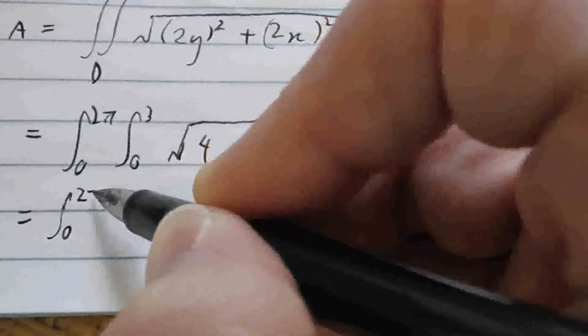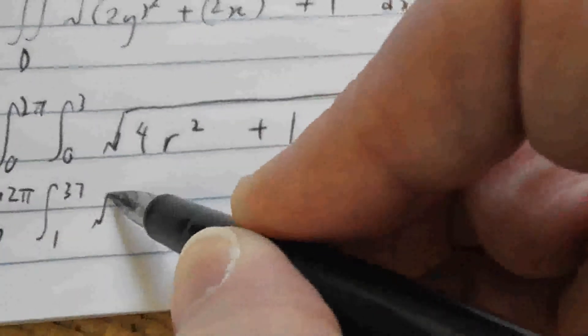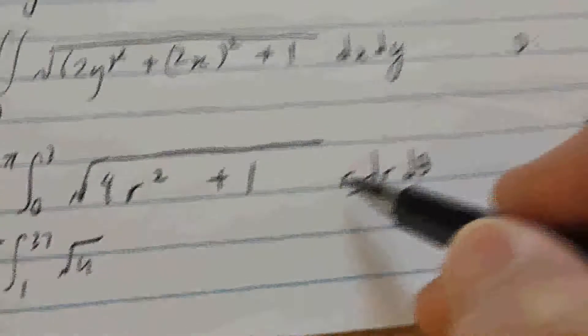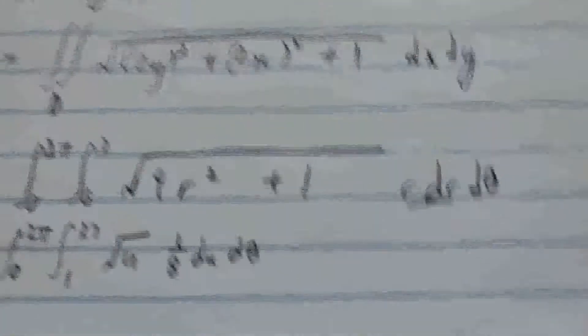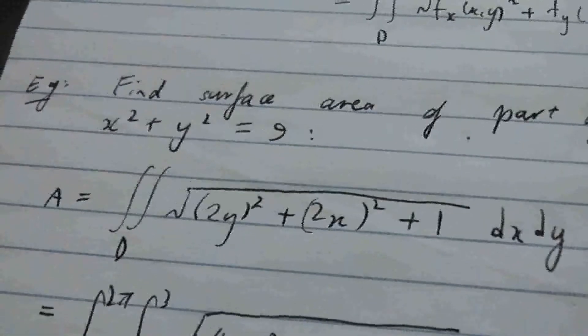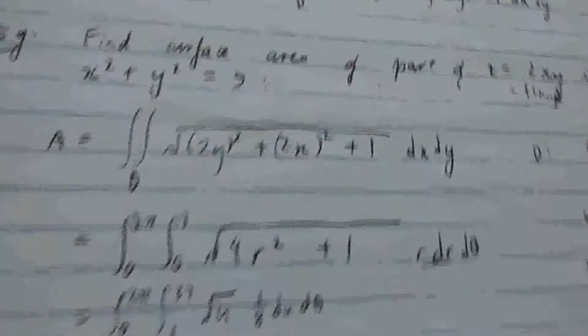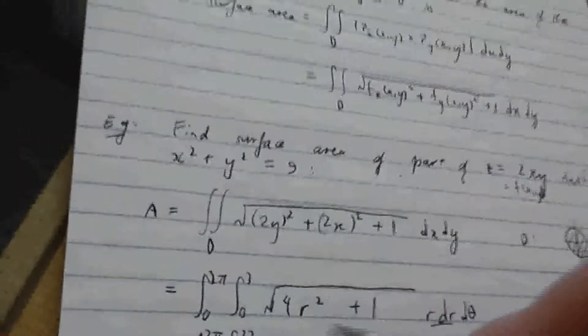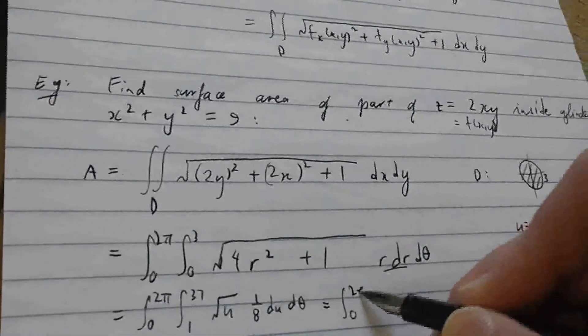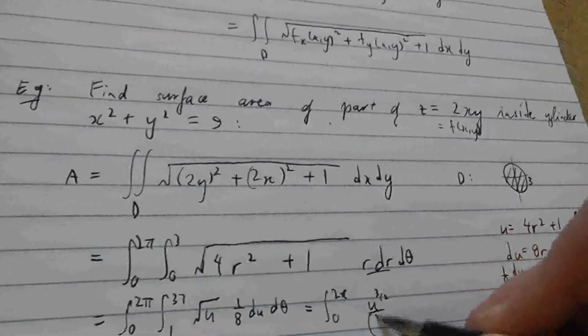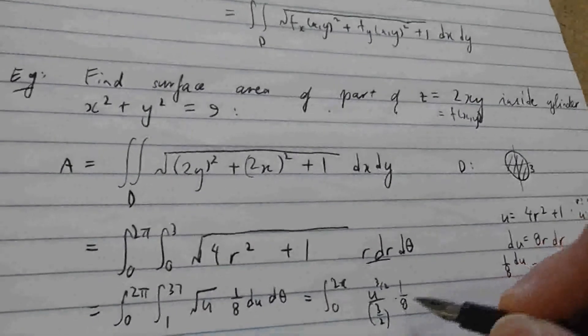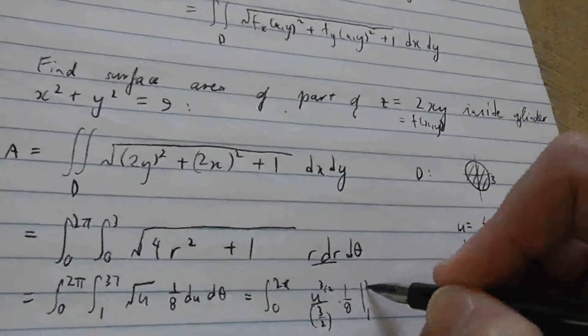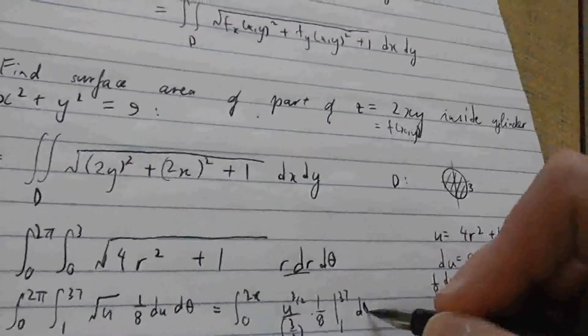Right, so let's go ahead and make this substitution. So we leave our theta integral as it is. And then here we integrate from 1 to 37, the square root of u. And then r dr is just 1/8 du, d theta. So we can carry out the integration. When we find the anti-derivative of u to the half, it's u to the 3 halves divided by the new power. And we still have an 8th in the denominator. This must be between 1 and 37, d theta.